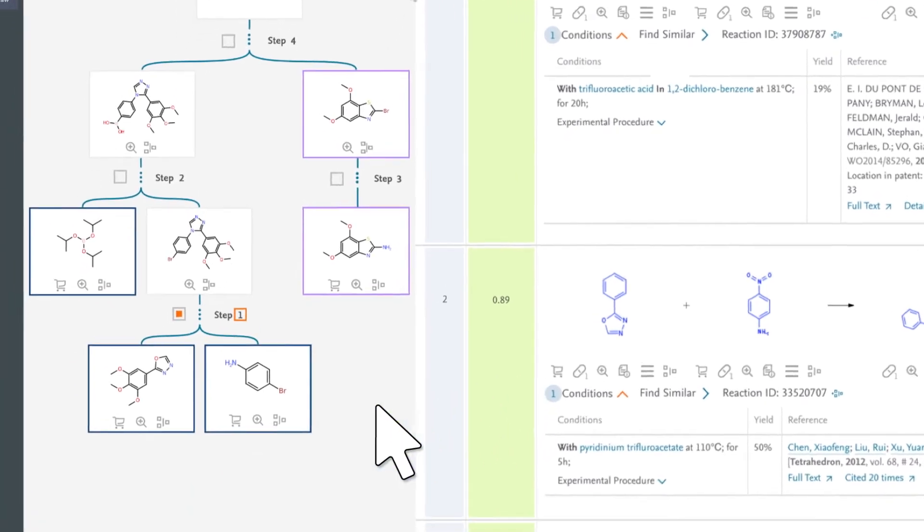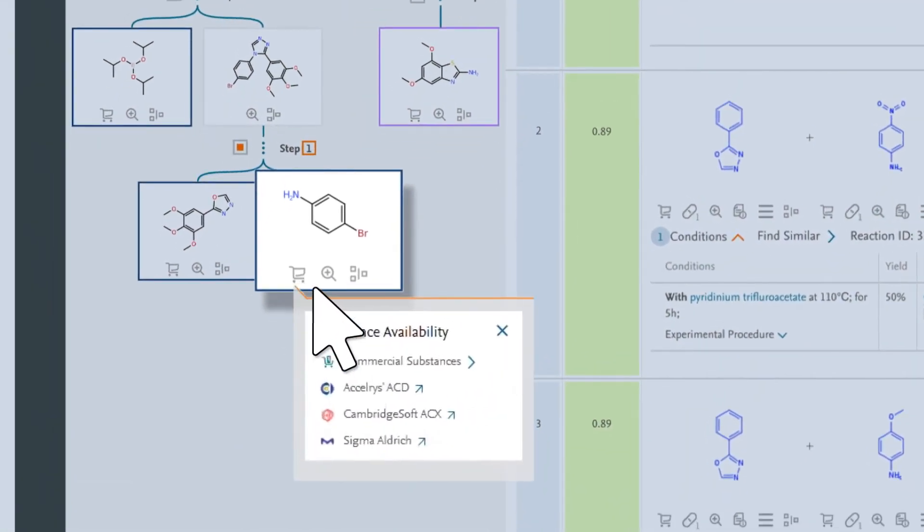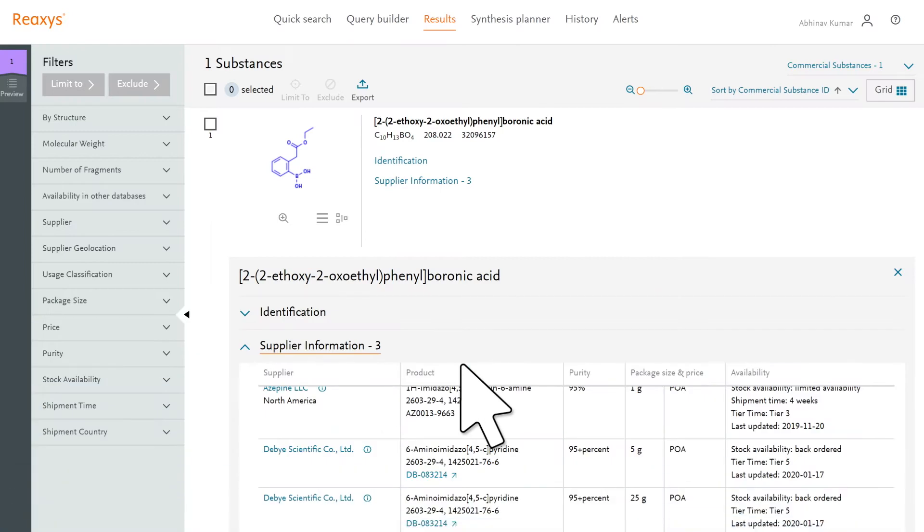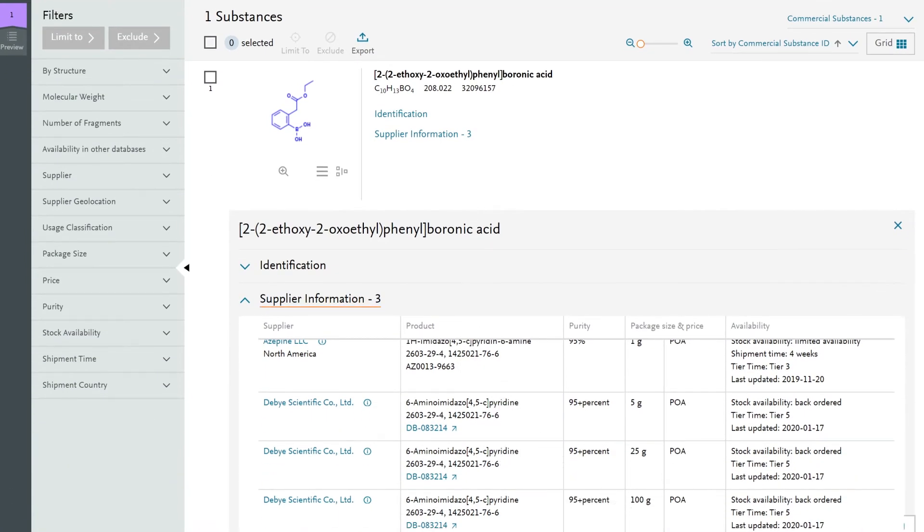Unique to ReAxis is that routes always provide purchasable starting materials, or in-house integrated stockroom compounds, or proprietary molecules.